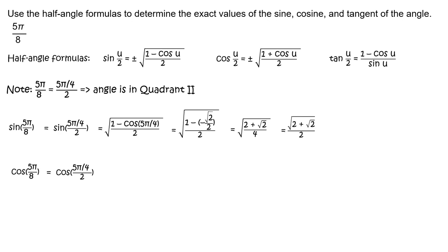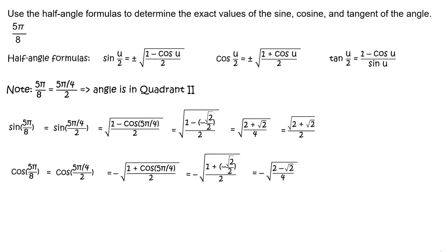To find cosine of 5π/8, write cosine of 5π/8 equals cosine of (5π/4) divided by 2. Use the half-angle formula and substitute 5π/4 for u. Since the angle is in quadrant 2, write negative of the square root of the quantity (1 plus cosine of 5π/4) divided by 2. Recall that cosine of 5π/4 equals negative √2/2. Multiplying and simplifying gives negative of the square root of the quantity (2 minus √2) divided by 2.